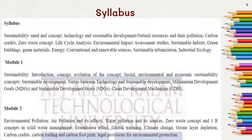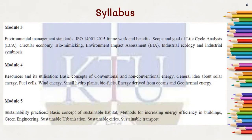Let us have a brief description about the syllabus of Sustainable Engineering. There are five modules. The first module deals with sustainability. The second module deals with environmental pollution. The third one deals with environmental management standards. The fourth module deals with resources and its utilization. And the last module deals with sustainability practices.